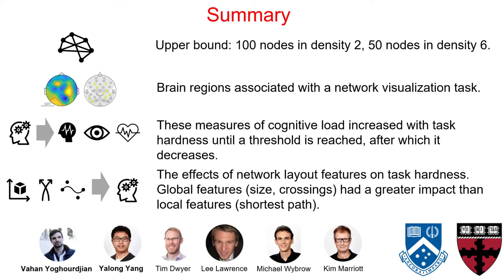In summary, we identified the upper bound of complex graph people can read. We found brain regions that possibly associated with finding the shortest path task. We also found cognitive load increased with task hardness until threshold, after which it decreases as the user may give up and put less efforts in. We built models between hardness and graph features. We found global features had a greater impact on hardness. Thank you very much for your attention.